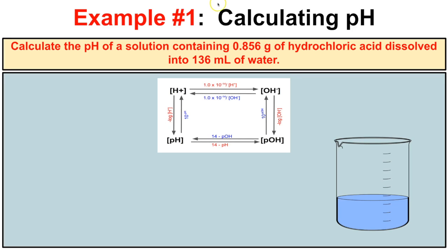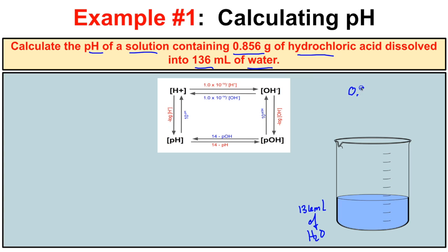In this first example, it says to calculate the pH of a solution containing 0.856 grams of hydrochloric acid dissolved into 136 milliliters of water. We have a beaker of water here containing 136 milliliters of H2O, and we are going to add 0.856 grams of HCl to it. What we're asked to figure out is the pH of this solution.